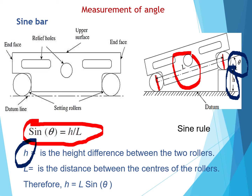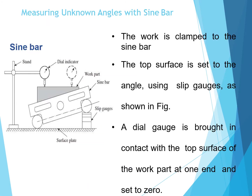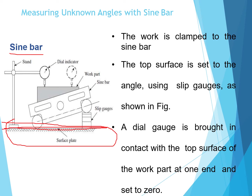To set the height, we use slip gauges. The sine bar is placed on a surface plate. One end of the sine bar is lifted upwards, and the workpiece — which has some inclination — is placed onto it. When I lift one end, the inclined surface of the workpiece becomes parallel to the surface plate, achieved by placing slip gauges underneath.